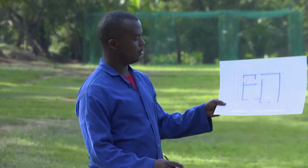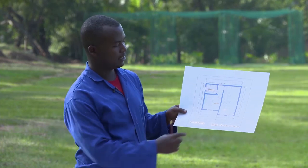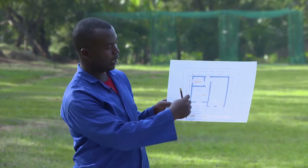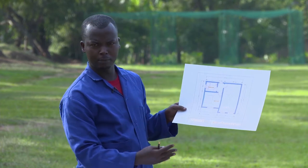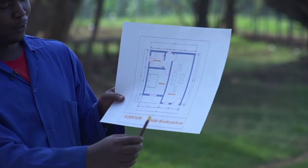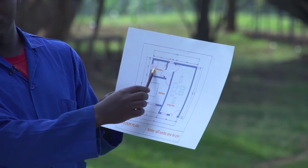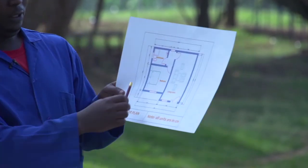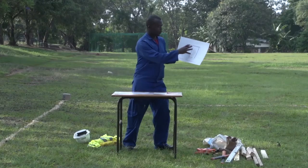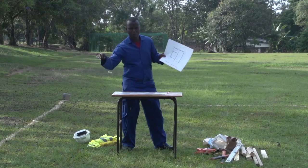As you see here, for this plan here, we have this architectural drawing. We have a full plan of a building. Here we have a living room, a bedroom, and a bathroom. This is a one-bedroom building, and we need to transfer this drawing to the ground.